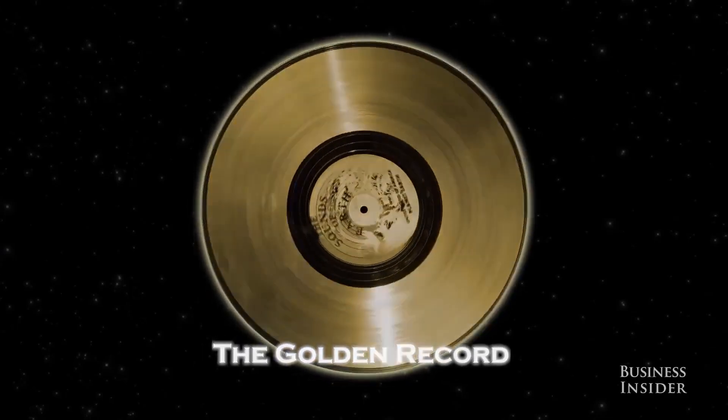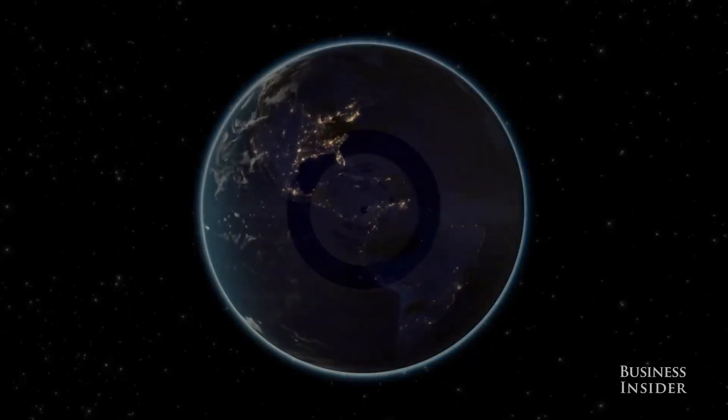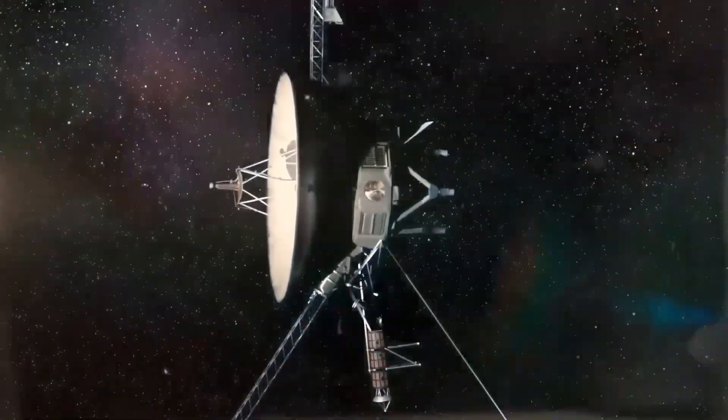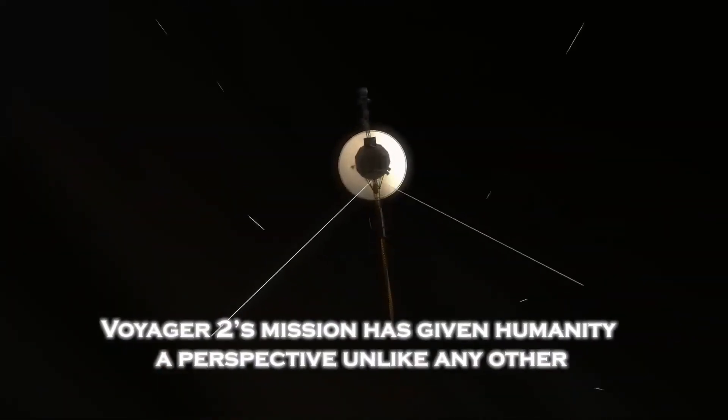Recently, Voyager's plasma wave system detected a faint hum, the sound of interstellar plasma. This marked the first continuous measurement of plasma density, offering new insights into the nature of the space between stars.